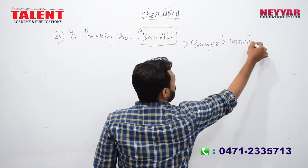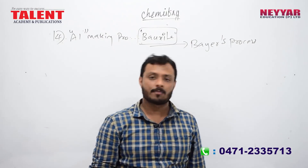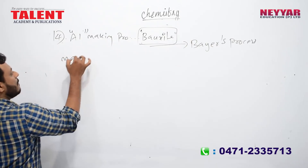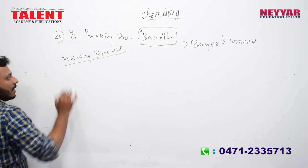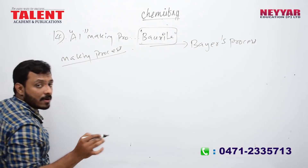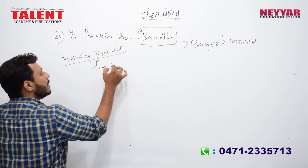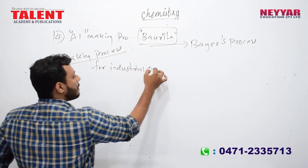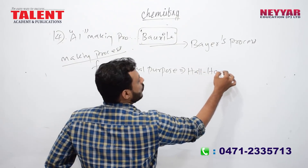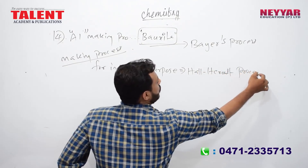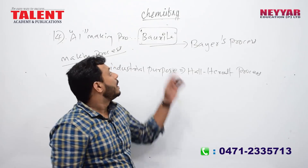Bauxite gives us aluminum through the Bayer process. The corundum making process uses the same ore — that is the Bayer process. The aluminum making process from bauxite for industrial purposes — that is the Hall-Héroult process.